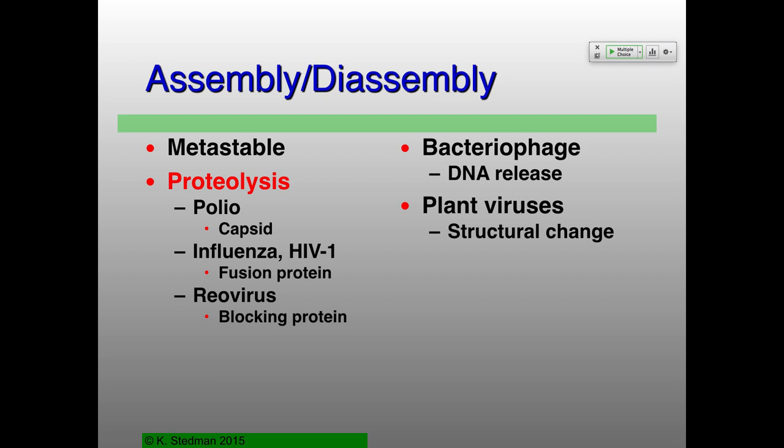For polio, proteolysis is required to get an infectious particle, and it cleaves the capsid proteins as the virus is being assembled, not when it's being released. Influenza and HIV have so-called fusion proteins that literally fuse the membrane of the virus with the membrane of the host — these must have proteolysis before they can be functional.